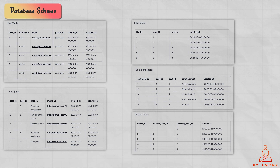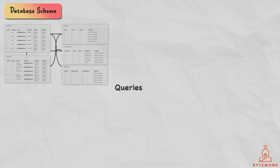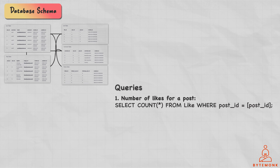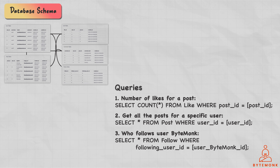These tables have the following relationships: a user has many posts, and a post belongs to a single user. Posts can have many likes, and likes belong to a user and a post. Posts have many comments, and comments belong to a user and a post. A user has many follows as a follower, and a user has many follows as a following user. With this schema, you can easily run queries such as the number of likes for a post, all posts for a specific user, who follows the user ByteMonk, or which users ByteMonk follows. These queries should be efficient with appropriate indexing on the tables, and the database should be able to handle the scale of the system.